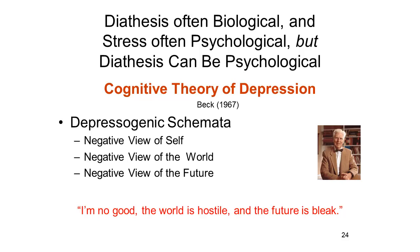A schema is an organized cognitive framework for perception and memory. Combined with information supplied by the stimulus, it allows us to make inferences about what's out there in the environment. Beck identified three depressogenic schemata that a lot of depressed patients shared in common: a negative view of themselves, a negative view of the world, and a negative view of the future. The person says to himself basically: I'm no good, the world is hostile, and the future is bleak.